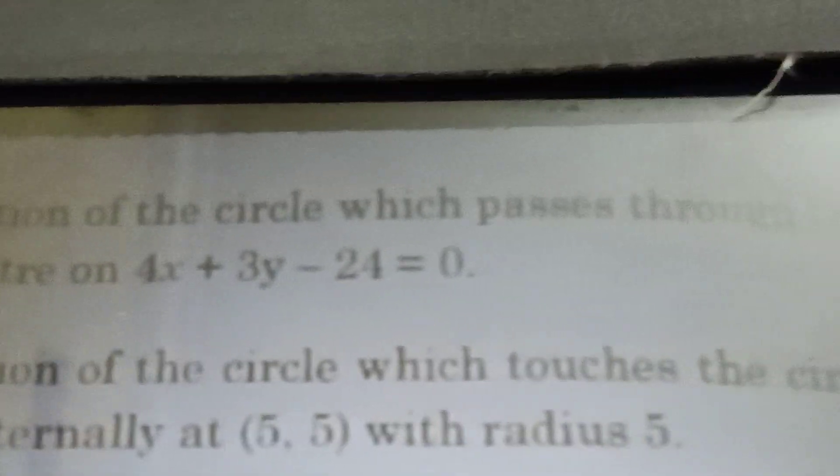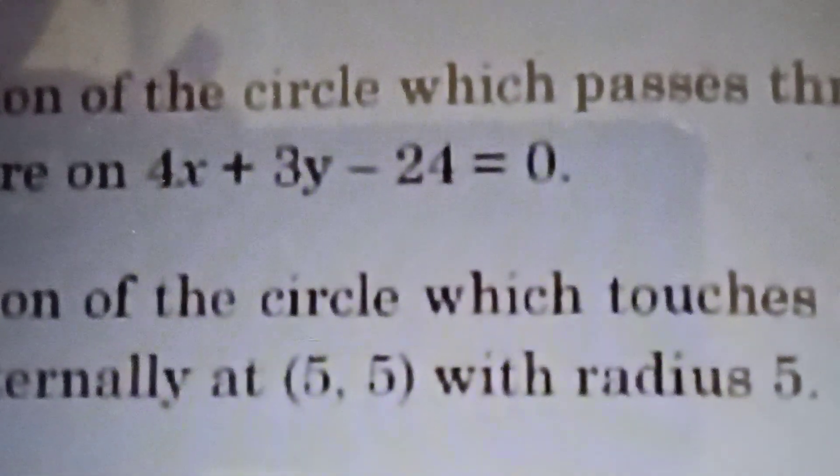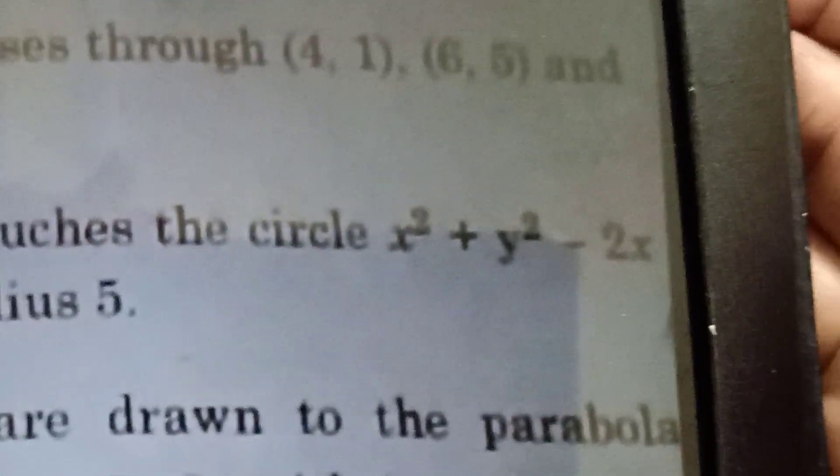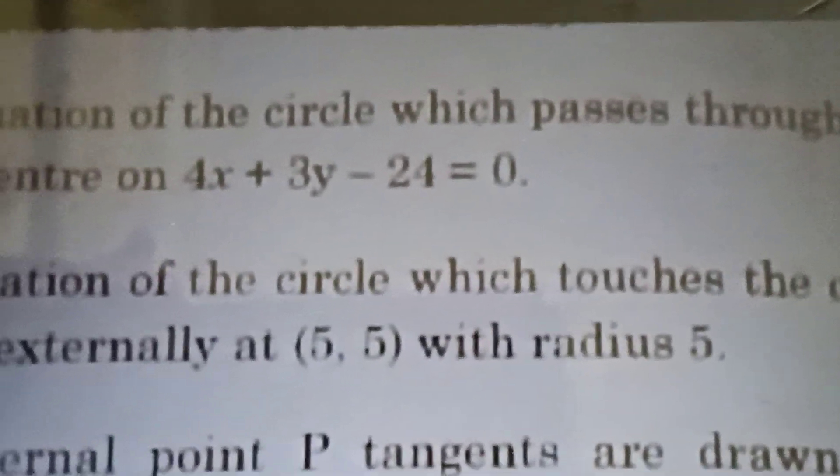I have no table. That's why I can't find a table. Find the equation of the circle which passes through (4,1), (6,5), with center on 4x + 3y - 24 = 0. This is the 18th bit. 19th bit: find the equation of the circle which touches the circle x² + y² - 2x - 4y - 20 = 0 externally at (5,5) with radius 5. This is example problem 1.